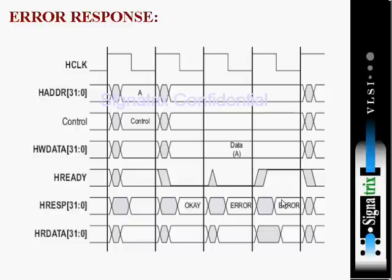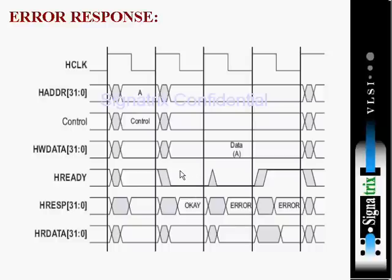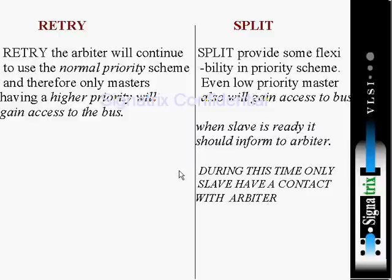The box shown under data and control in the diagram represents an unknown value — marked as X — so we do not need to worry about it. This is the example for the error response scenario. The one extra cycle taken to decide between error, retry, or split is called the wait state. In the next slide, we will get a clear difference between retry and split response.